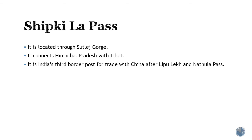Shibkila Pass is located through the Satlaj Gorge and it connects Himachal Pradesh with Tibet. It is India's third border post for trade with China, after Lipu Lake and Nathula Pass.